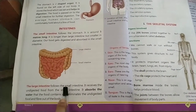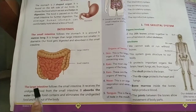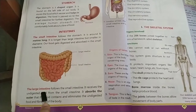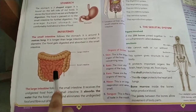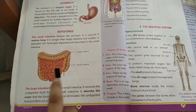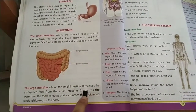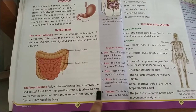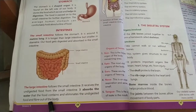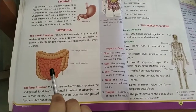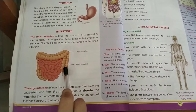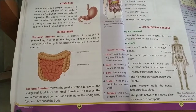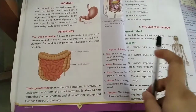The large intestine follows the small intestine. Small intestine से जुड़ा हुआ large intestine होता है। It receives the undigested food from the small intestine. जो खाना small intestine में नहीं digest हो पाता वो large intestine में pass out होता है। It absorbs the water that the food contains and eliminates the undigested food and fiber out of the body. Large intestine उसमें present water को absorb कर लेती है और बाकी undigested food को body से बाहर निकालती है.